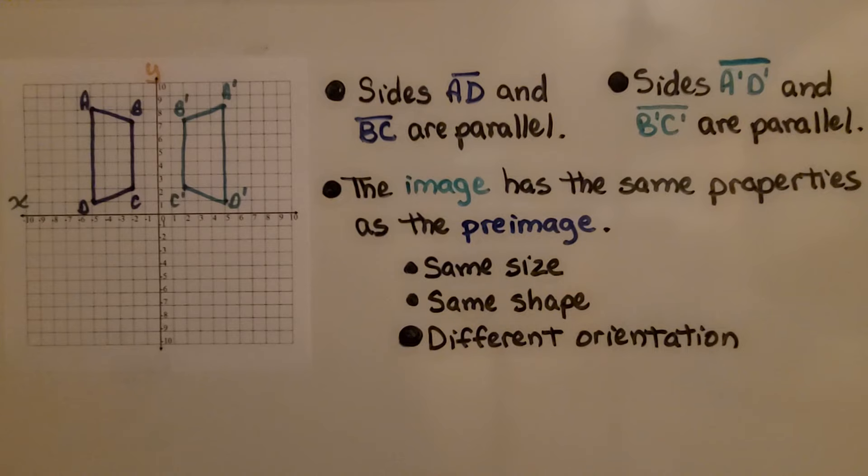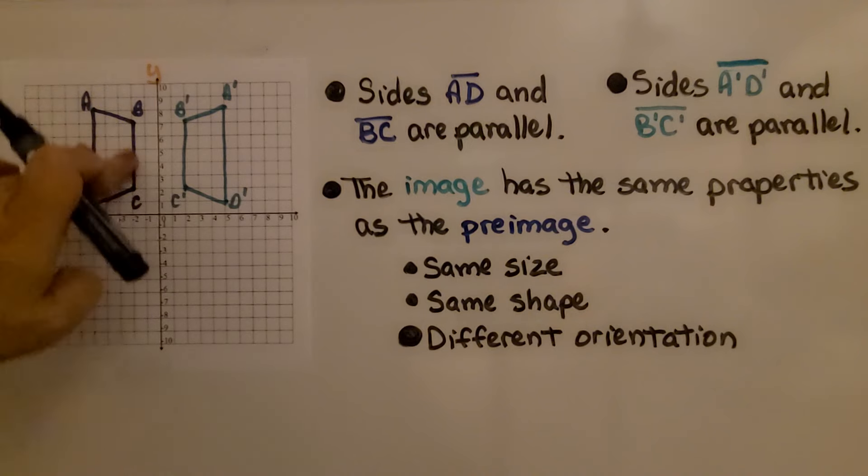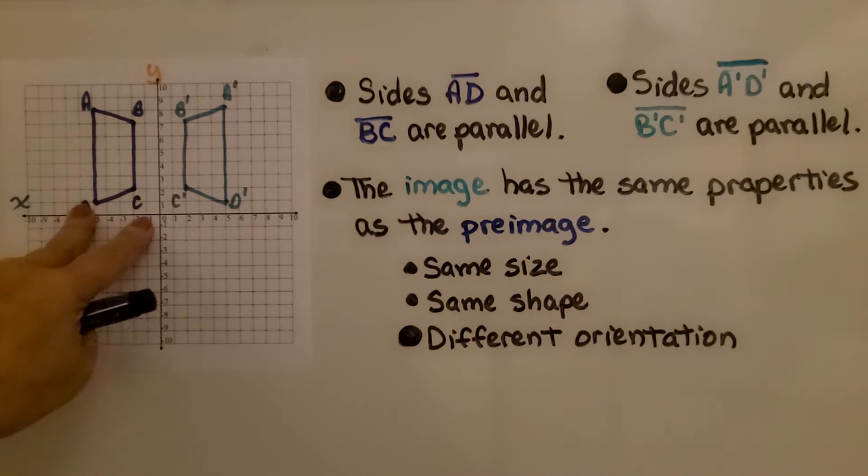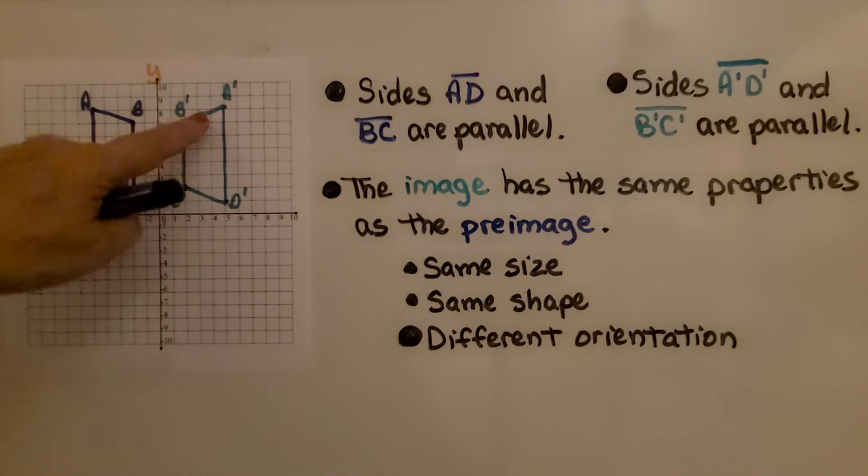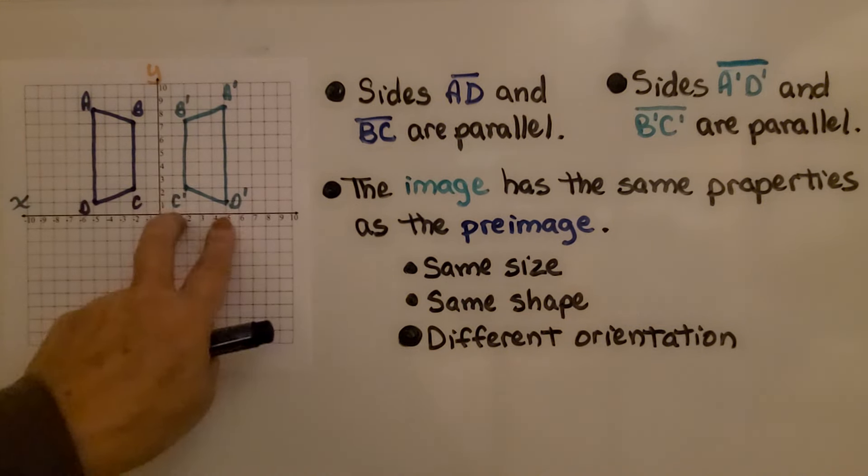Now let's take a look at the sides again. Line segments AD and BC are parallel to each other. And sides A'D' and B'C' are parallel to each other.